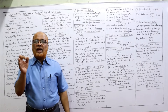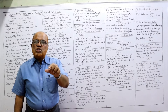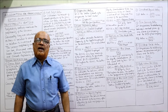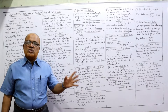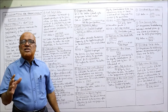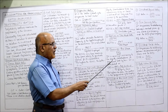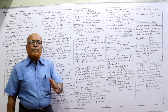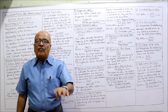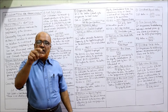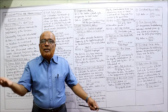Earnings per share (EPS) is a very important ratio. It shows how much each shareholder earns on every share they hold. Every organization aims for higher and higher EPS. The formula is: profit after tax minus preference dividend, divided by number of equity shares. Higher the EPS, better it is for the company.